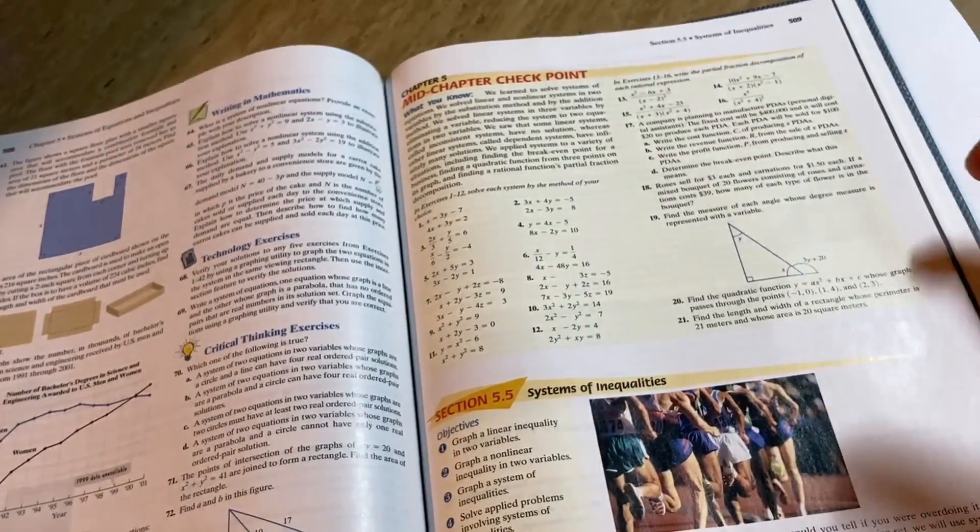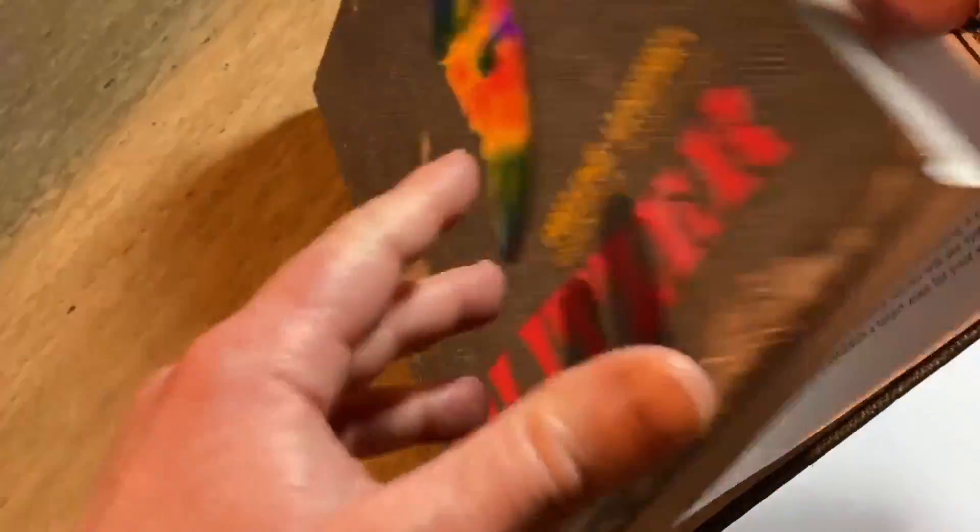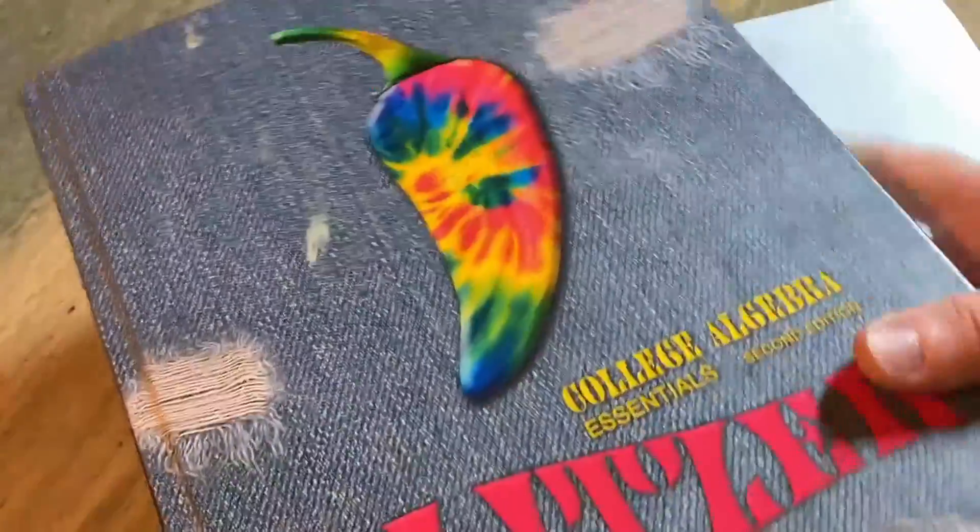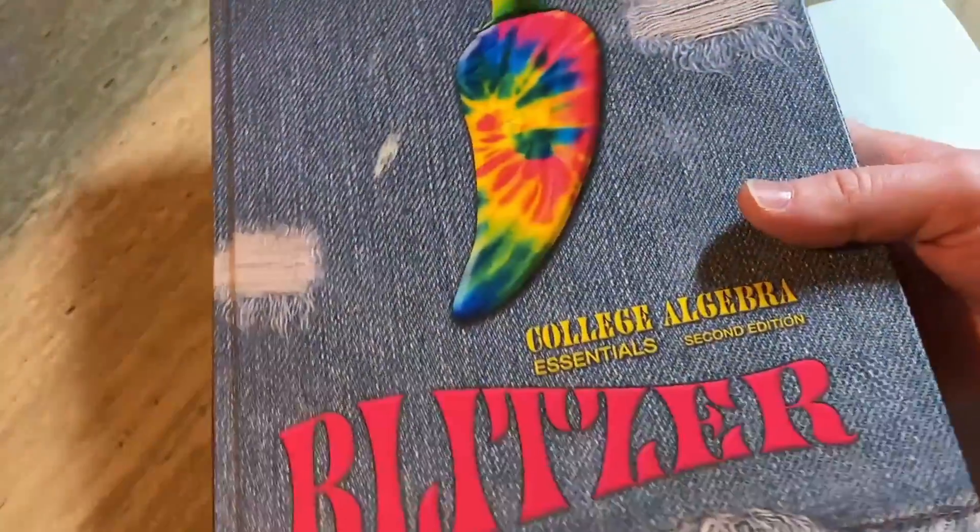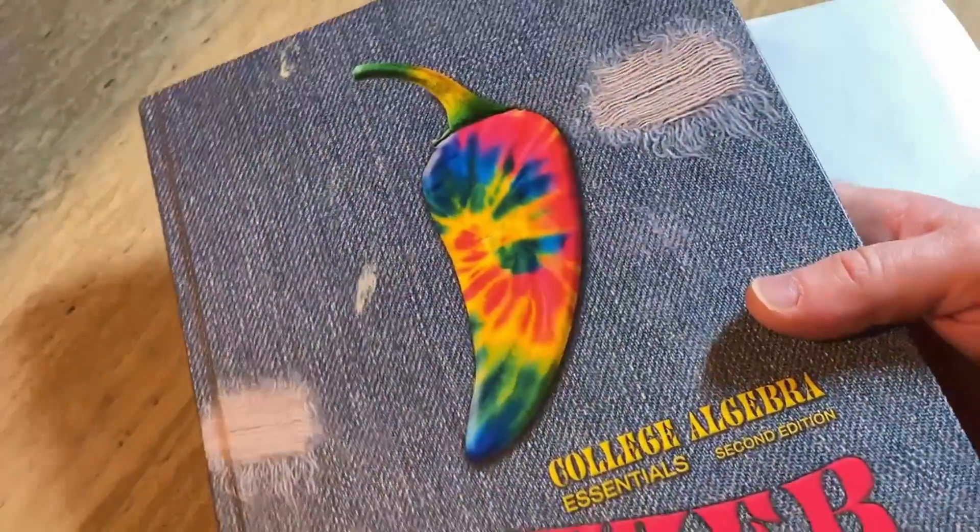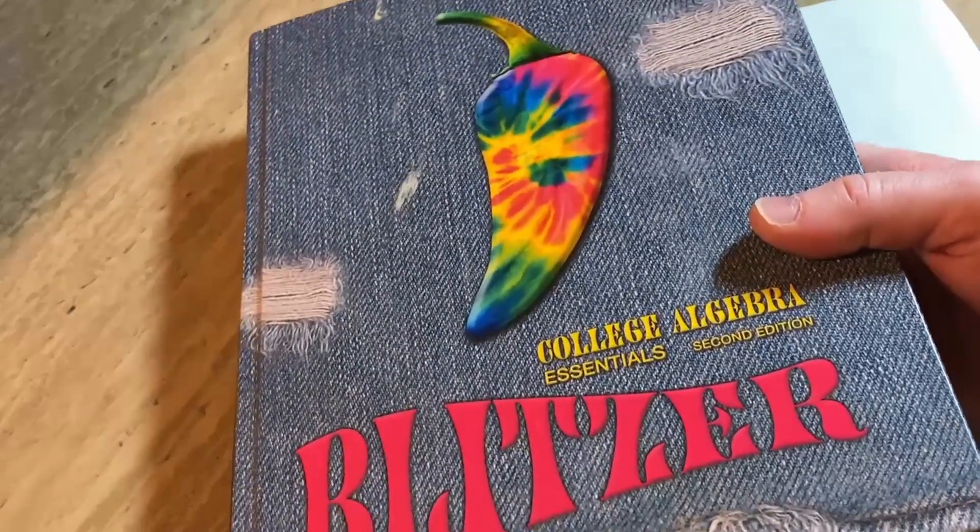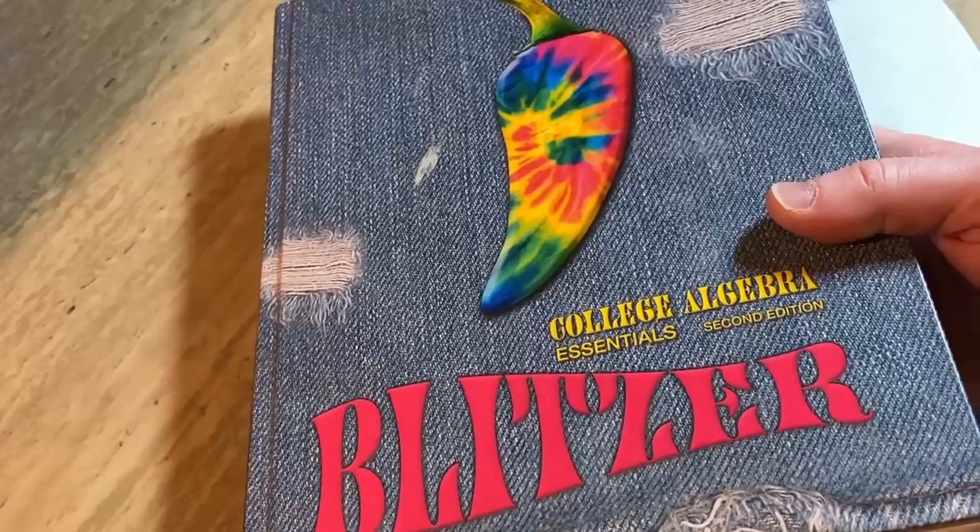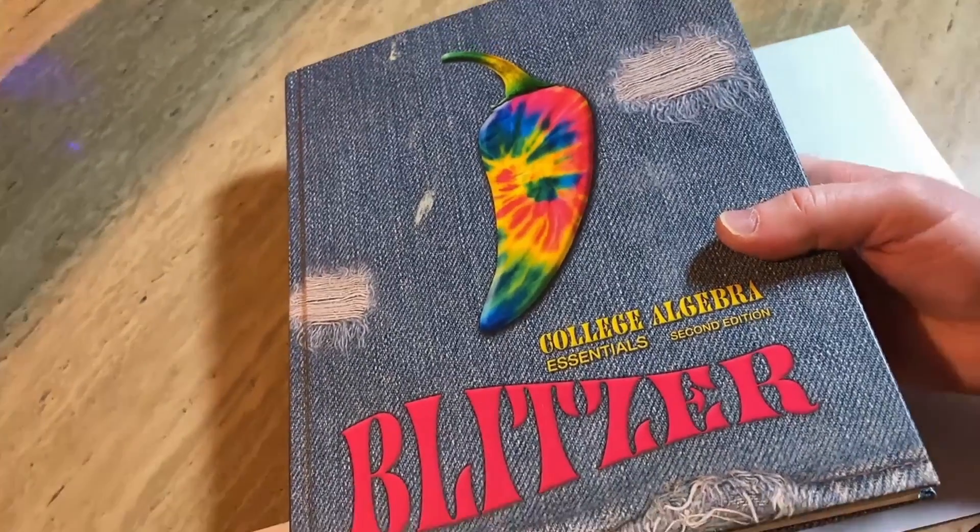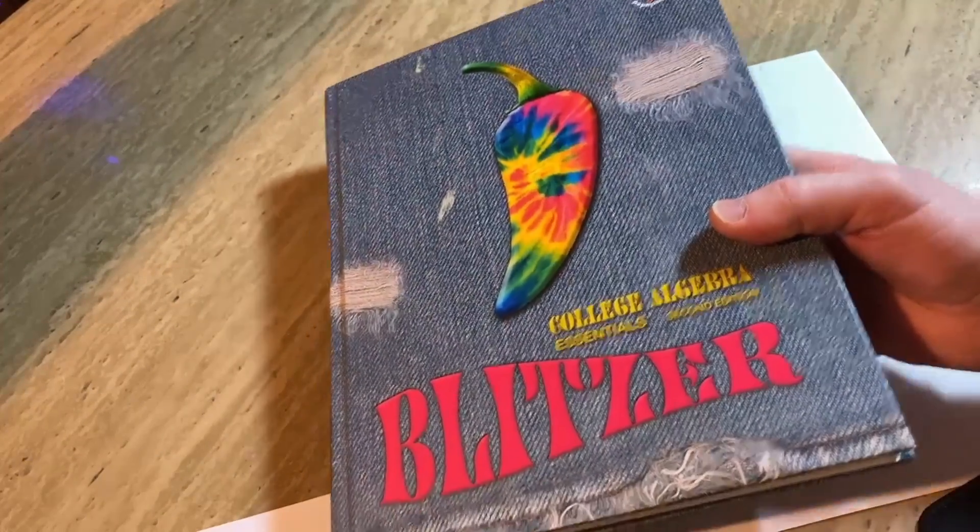So that's Blitzer. Give you a quick look there. This is a basic algebra book. So I think it's good to have a book like this. And this is the essentials version. I'll try to leave a link in the description to this one and just the regular version because the regular version has more content. Let's take a look at the next book.